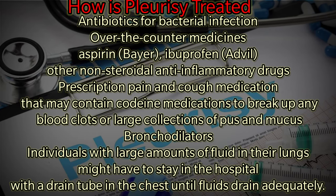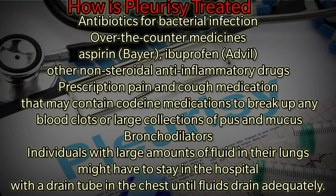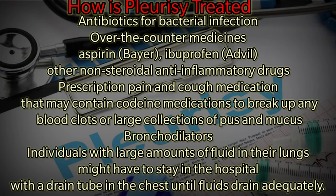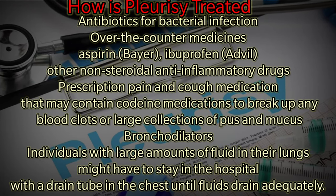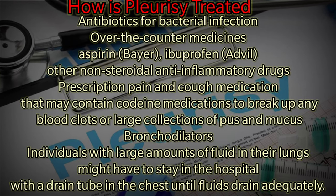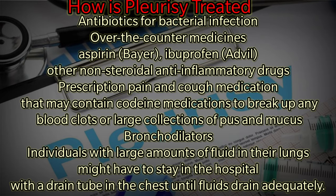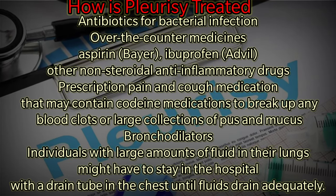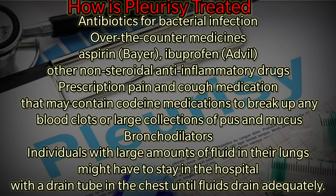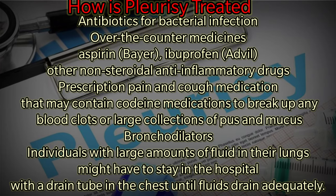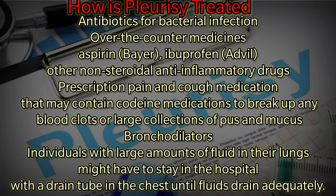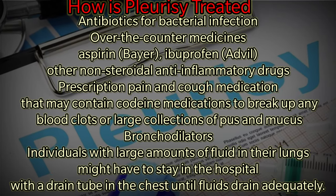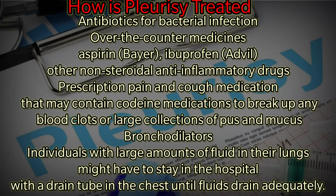Treatment options include antibiotics for bacterial infection, over-the-counter medicines including aspirin, ibuprofen, or other non-steroidal anti-inflammatory drugs, prescription pain and cough medication that may contain codeine, and medications to break up blood clots or large collections of pus and mucus. Bronchodilators via metered dose inhaler devices, such as those used to treat asthma, may also be used. Individuals with large amounts of fluid in their lungs, or pleural effusions, might have to stay in the hospital with a drain tube in the chest until the fluids drain adequately. Thank you all, have a nice day.